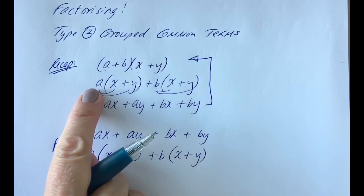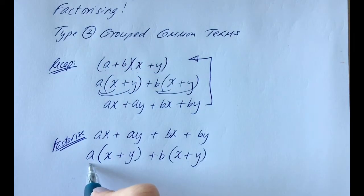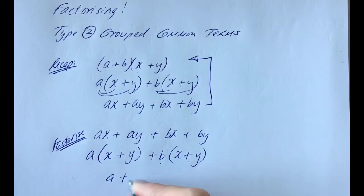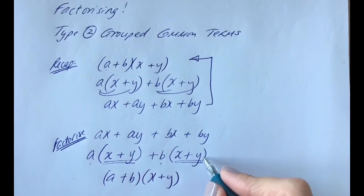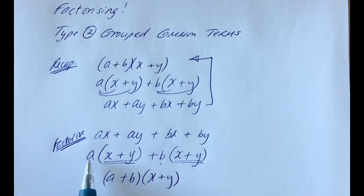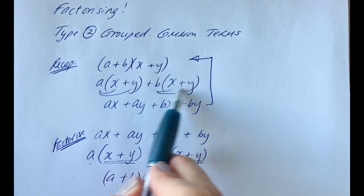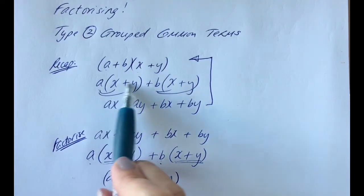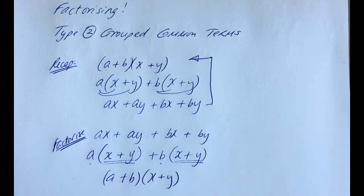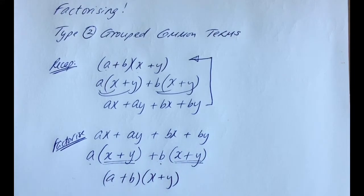You can see we've now got to the second step. To get to our final step — the two brackets — what's been split up forms your first bracket, and the repeated bracket is always the second bracket. That's how we go from that step to grouping, then to our final answer. When factorising grouped common terms, there are always four terms, so it's easy to spot. We take out what's common in each pair and then group.